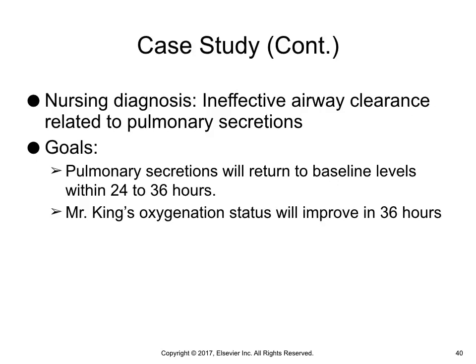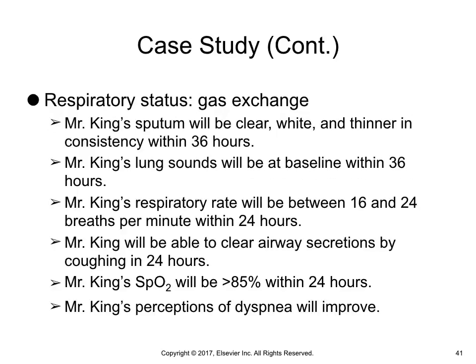Case study continued: An appropriate nursing diagnosis is ineffective airway clearance related to pulmonary secretions. Goals include pulmonary secretions will return to baseline levels within 24 to 36 hours, and Mr. King's oxygenation status will improve in 36 hours. Expected outcomes include: Mr. King's sputum will be clear, white, and thinner in consistency within 36 hours; Mr. King's lung sounds will be at baseline within 36 hours; Mr. King's respiratory rate will be between 16 and 24 breaths per minute within 24 hours; Mr. King will be able to clear airway secretions by coughing in 24 hours; Mr. King's oxygen saturation will be greater than 85% within 24 hours; and Mr. King's perceptions of dyspnea will improve.